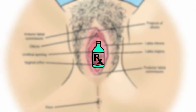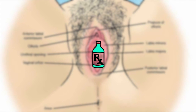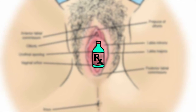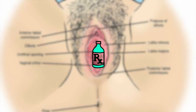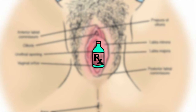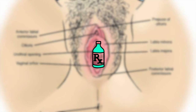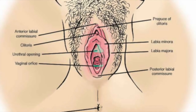Using your non-dominant hand, apply outward and lateral pressure to the labia in order to help you better visualize the meatus. This may also be achieved using a vaginal speculum.